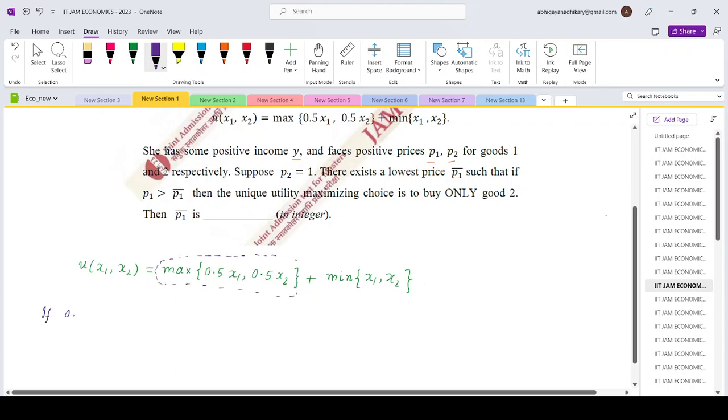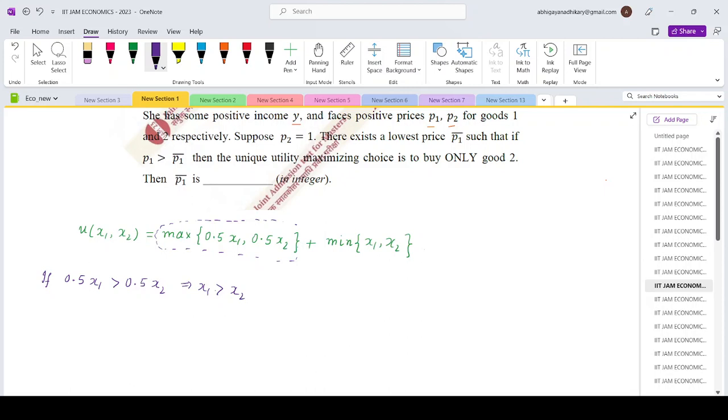If 0.5x₁ is greater than 0.5x₂, that means if x₁ is greater than x₂, then my utility function u of x₁, x₂ would be 0.5x₁ plus, since x₁ greater than x₂, the min part which is min of x₁, x₂ would simply become x₂.